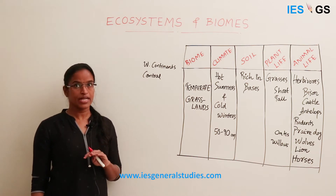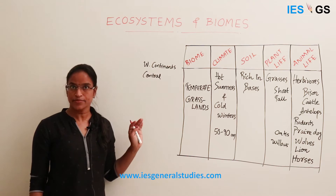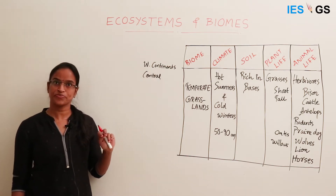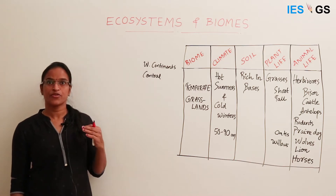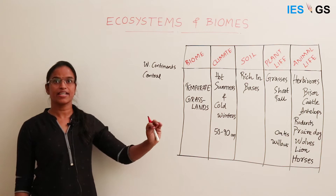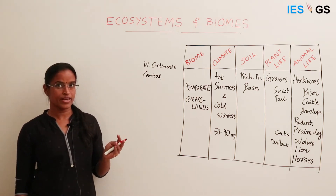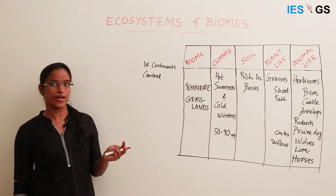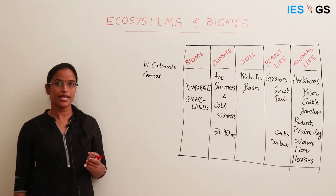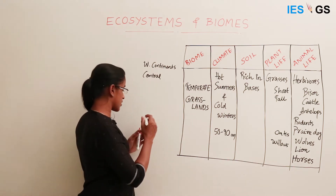These temperate grasslands are found mainly in North America, Asia, and Europe and are very extensive. If you remember the Microsoft operating system's default desktop, they used to show a very green grassland with blue sky — that is the grassland found in North America. These grasslands are found by different names in different continents; in North America it is called prairies.